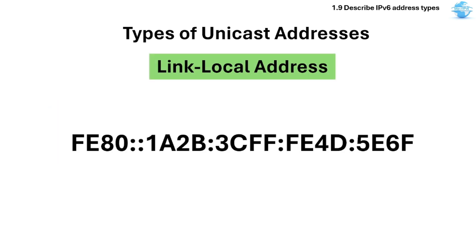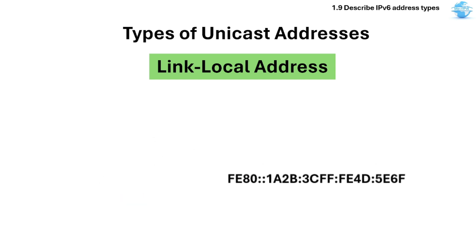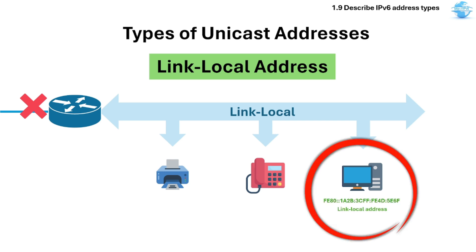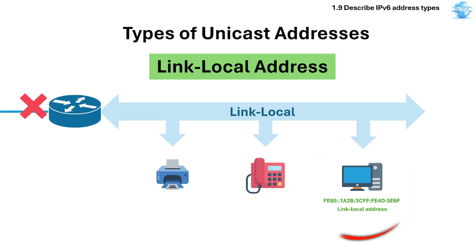Another type of Unicast address is the Link Local. The range is FE80/10. This is used for communication only on the local link, and is not routable off the link or the network. It is automatically generated by all interfaces. Exam tip: devices must have a link local address, even if they don't have a global address.